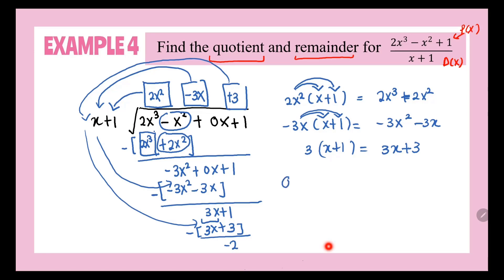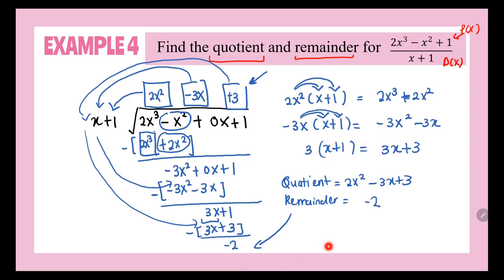Now, to answer the question: the quotient is 2x squared minus 3x plus 3, which is on top. The remainder is at the bottom, which is negative 2. So to find the quotient and the remainder, we use long division.